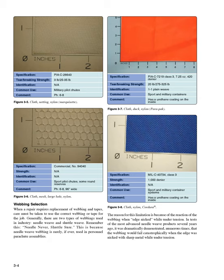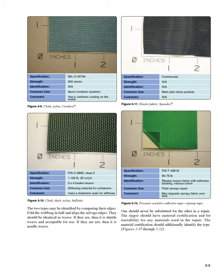Webbing Selection: When a repair requires replacement of webbing and tapes, care must be taken to use the correct webbing or tape for the job. Generally, there are two types of webbings used in industry: needle weave and shuttle weave. Remember this — needle never, shuttle sure — because needle weave webbing is rarely, if ever, used in personnel parachute assemblies. The reason for this limitation is the reaction of the webbing when edge-nicked while under tension. Tests demonstrated dramatically that needle weave webbing would fail catastrophically when the edge was nicked with sharp metal under tension. The two types may be identified by folding the webbing in half and aligning the selvedge edges; if they are identical in weave, it is shuttle weave and acceptable for use; if not, it is needle weave. One should never be substituted for the other in a repair. The rigger should have material certification and lot traceability for any materials used in the repair.